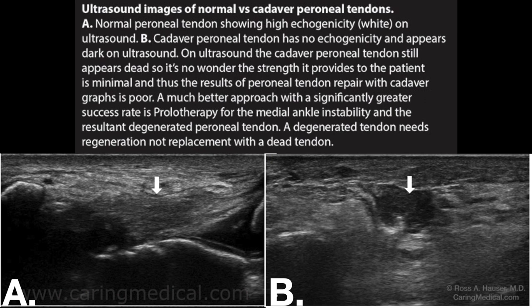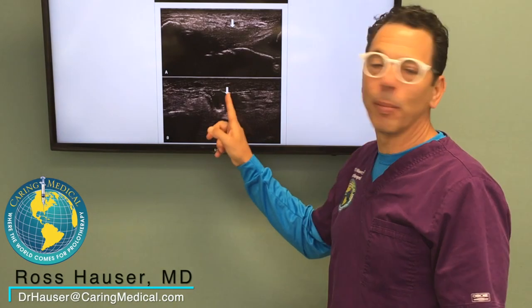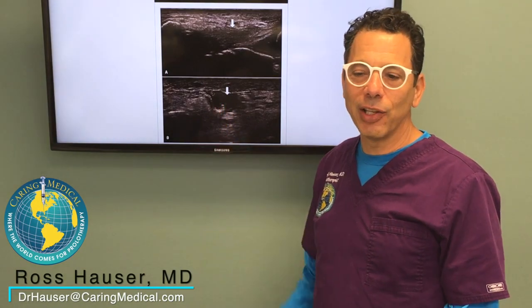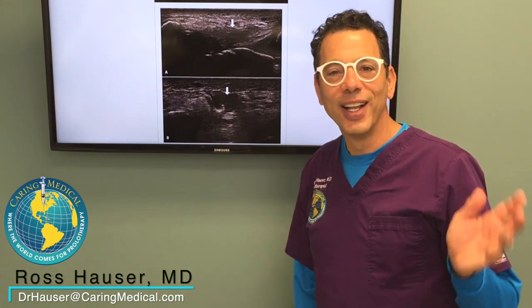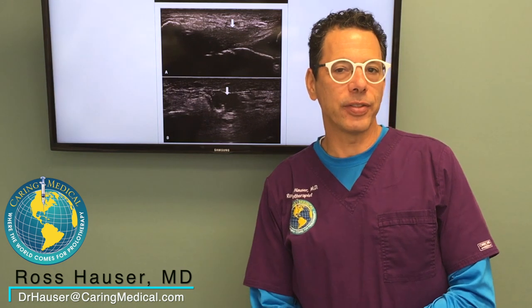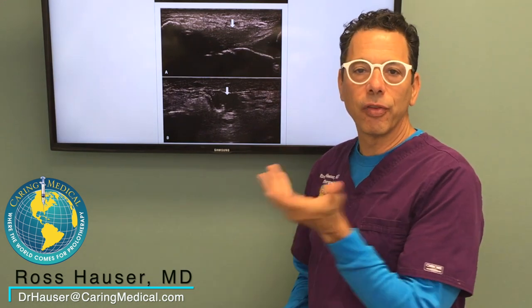This is an ultrasound of a normal posterior tibial tendon — really thick, looks really good, really healthy. When the patient came in, I wanted to see what a cadaver tendon looked like under ultrasound, and it was completely black — it actually looked dead. So it's no wonder it's not going to work so well. A lot of times when people have these tendon surgeries, they don't do ligament reconstruction, so the tendon then can't support the medial arch by itself.